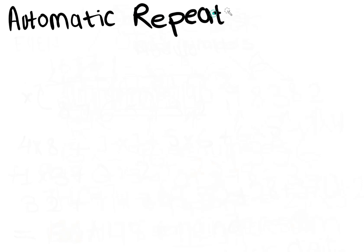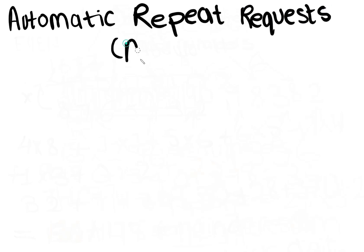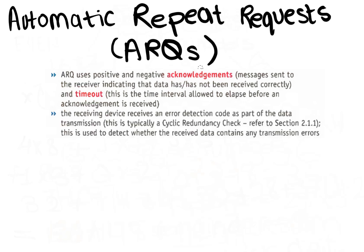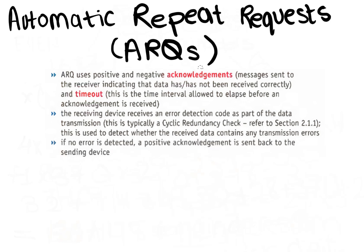Now let's talk about automatic repeat requests, or ARQs. An automatic repeat request is another way used to check data following data transmission. ARQ uses positive and negative acknowledgements — messages sent to indicate that the data has or has not been received correctly — and a timeout, which is a time interval allowed to elapse before an acknowledgement is received. The receiving device receives an error detection code as part of the data transmission, typically a cyclic redundancy check, used to detect whether the received data contains any transmission errors.